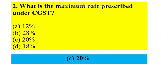Second question: What is the maximum rate prescribed under CGST? The maximum SGST as well as CGST is 20% each — 20% CGST plus 20% SGST. That is approximately a maximum of 40% GST in total.